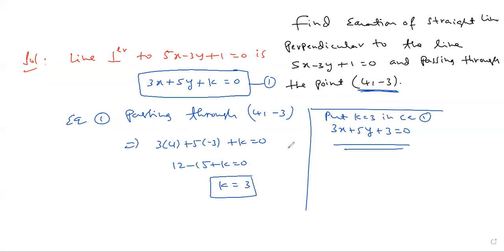So the required answer is 3x plus 5y plus 3 equal to 0. Okay, we have taken equation one as perpendicular to the given line, k unknown, calculate k, substitute, and that's the answer.